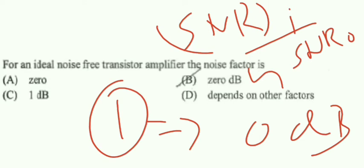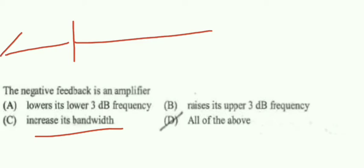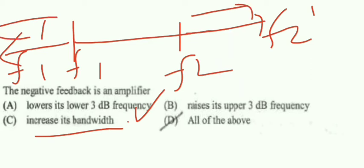The negative feedback in an amplifier: we know that negative feedback reduces stability and all, but it will increase the bandwidth. How is it increasing the bandwidth? The lower cutoff frequency becomes lowered further. If f1 is the lower cutoff frequency, it will reduce to f1 dash. If f2 is upper cutoff frequency, it will increase to f2 dash. So the difference between f1 dash and f2 dash, that is the new bandwidth after applying negative feedback, is also increasing. So bandwidth increases means lower cutoff frequency will lower further, upper cutoff frequency will be increased further. So option D is the right answer, so all the above are right.